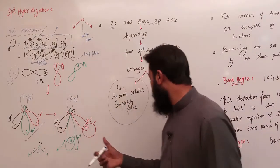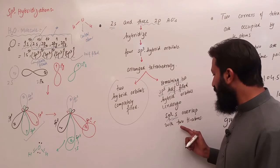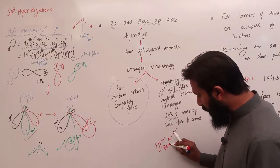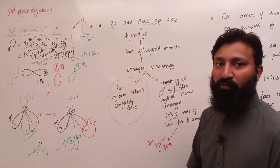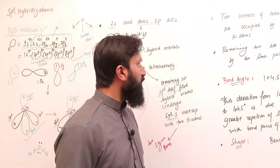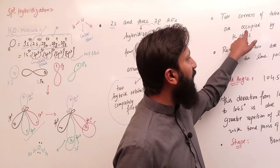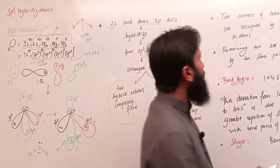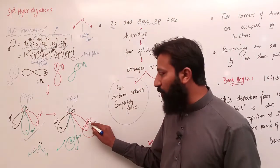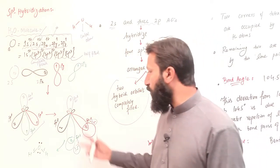The remaining two SP3 hybrid orbitals are half-filled, and these half-filled orbitals undergo SP3-to-S linear overlap with the two hydrogen atoms and form two sigma bonds। Two sigma bonds — one with each hydrogen atom — are formed, giving a tetrahedral structure because half-filled SP3 hybrid orbitals of oxygen linearly overlap with 1S atomic orbitals of two hydrogen atoms।